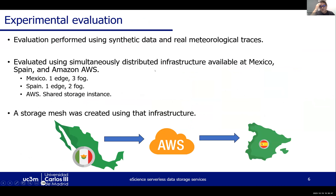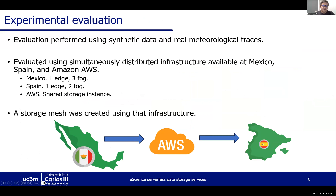We evaluated the architecture in a scenario where we moved data from Mexico to Spain, using intermediate instances deployed on AWS. We have one edge computer in Mexico, one edge computer in Spain, and different fog computers as intermediate nodes between these edge computers.